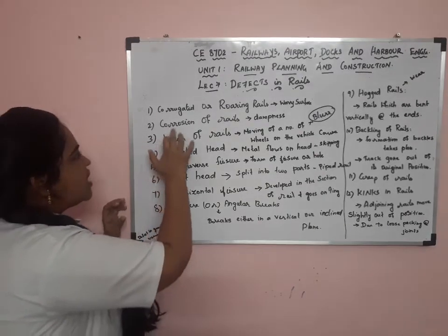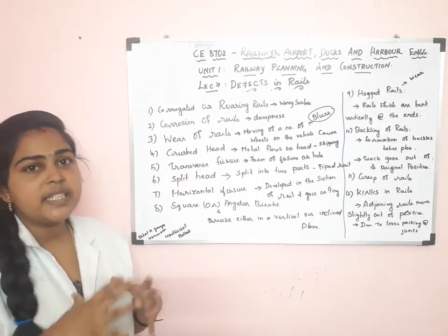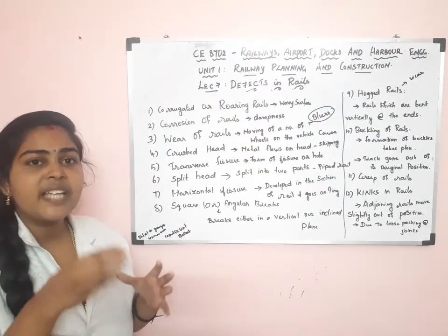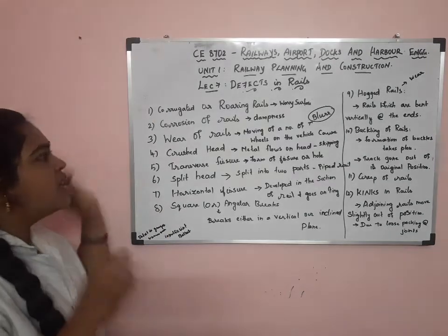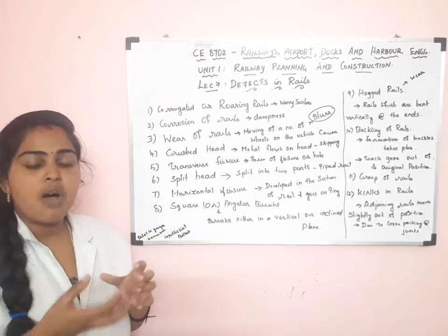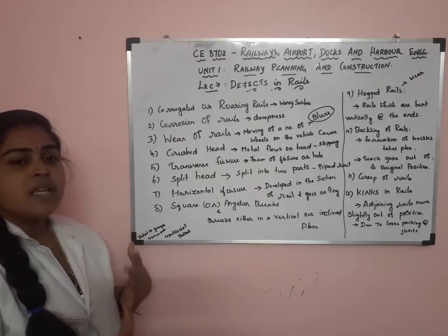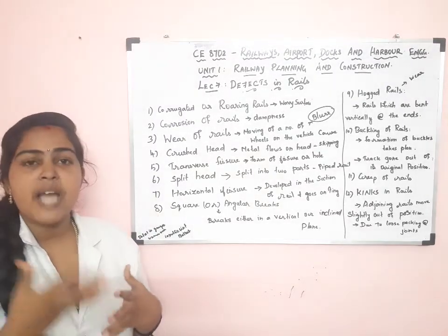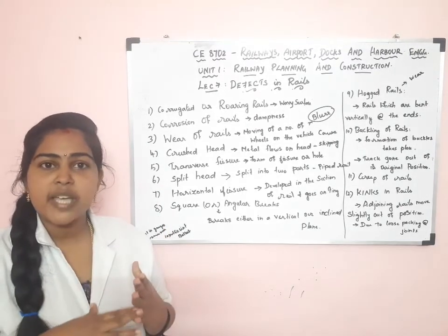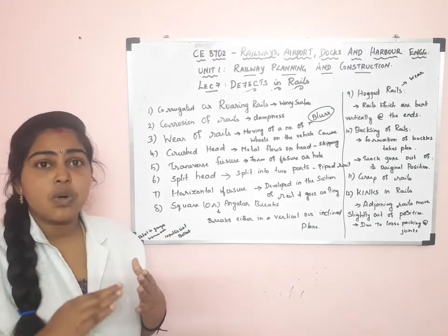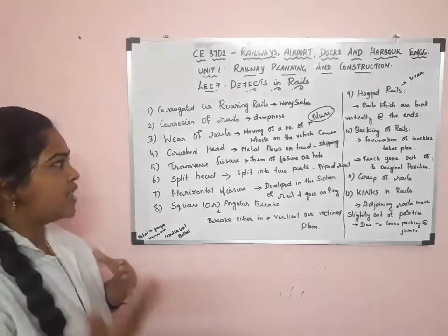Next one is Corrosion of Rails. The rails are mostly corroded in damp areas — where the area is wet or in a moisture condition, the rails get corroded. We have to avoid this corrosion because if corrosion occurs, the rail section will get reduced, the strength will also get reduced, and the wear will increase. If not prevented, it will lead to the failure of the rails.